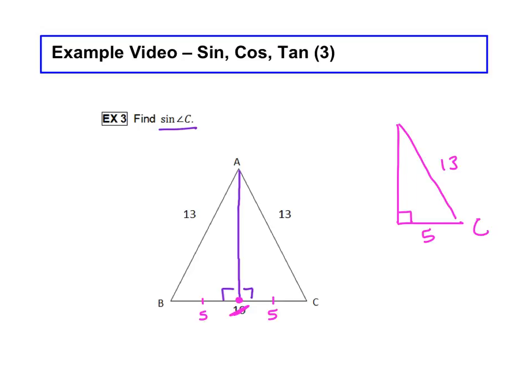In order to find the sine of angle C, remember, sine is SOH. I need the opposite and the hypotenuse. The opposite is across from angle C right here, and the hypotenuse is that longest side across from the 90, which is 13.